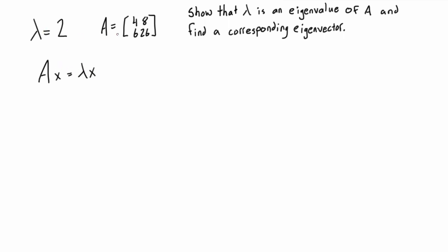So we have lambda and we have matrix A, so let's fill out what we can right now. We know that this is 4, 8, 6, 26. We don't know what vector x is, so let's just put it in as x1 and x2. We have lambda, we know that is the value of 2, and again we're going to write vector x as unknown, so just by components x1 and x2.